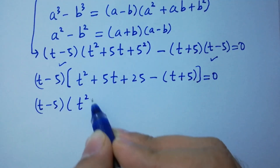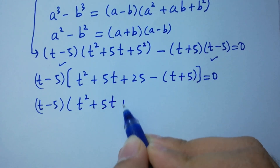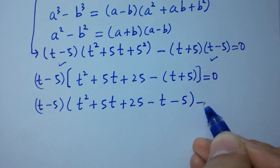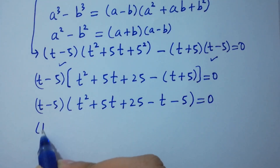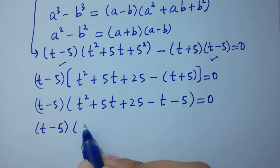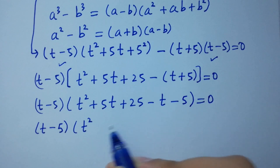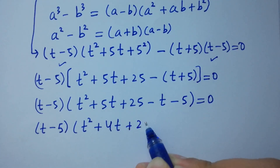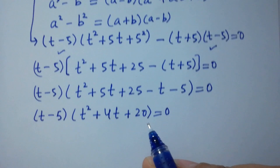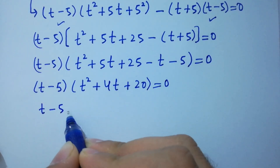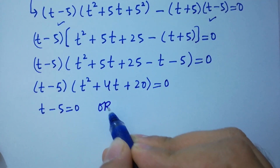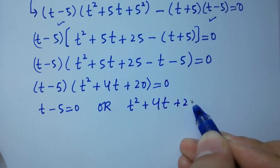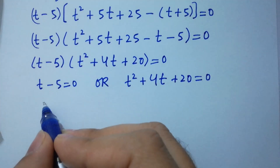Factoring out (t minus 5): we get t squared plus 5t plus 25 minus (t plus 5) equals 0, which simplifies to (t minus 5)(t squared plus 5t minus t plus 25 minus 5) equals 0, giving (t minus 5)(t squared plus 4t plus 20) equals 0.